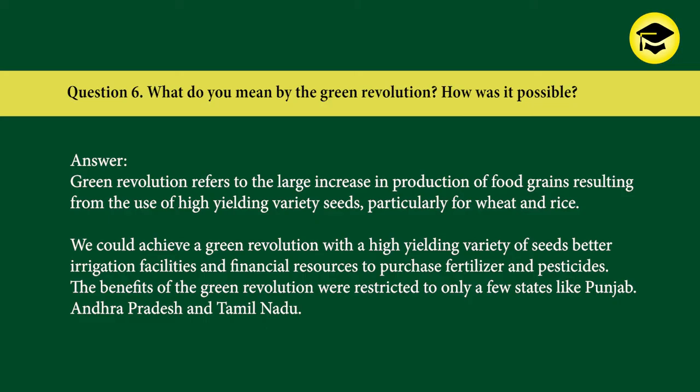Question 6: What do you mean by the green revolution? How was it possible? Answer: Green revolution refers to the large increase in production of food grains resulting from the use of high-yielding variety seeds, particularly for wheat and rice. We could achieve a green revolution with high-yielding variety seeds, better irrigation facilities, and financial resources to purchase fertilizer and pesticide. The benefits of the green revolution were restricted to only a few states like Punjab, Andhra Pradesh, and Tamil Nadu.